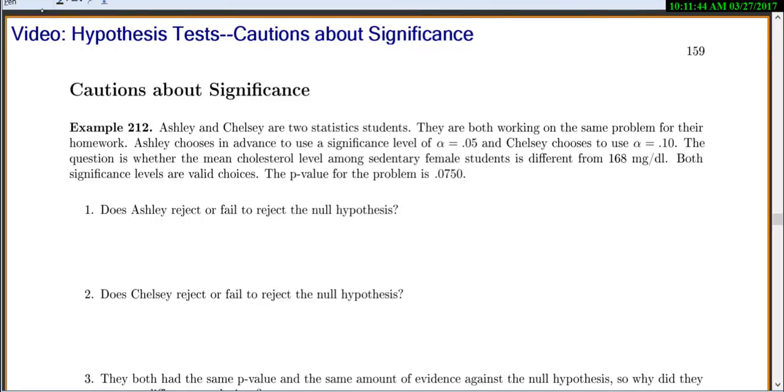So let's look at number one. Does Ashley reject or fail to reject the null hypothesis? So Ashley has a p-value of 0.0750. Well, both of them do because it's the same homework, same data set. And this p-value is blank than alpha equals, let's see, Ashley's using 0.05. So you always set up, let's compare the p-value to alpha.